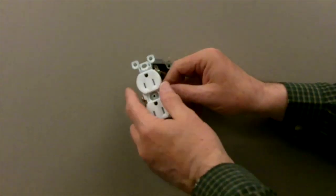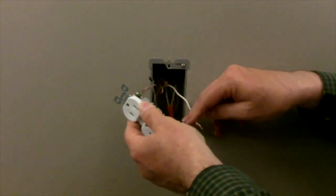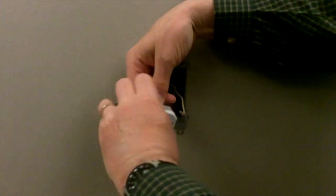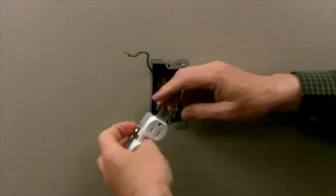If you are replacing an existing device, remove the wall plate, then remove the device mounting screws and pull the existing device out from the wall box.